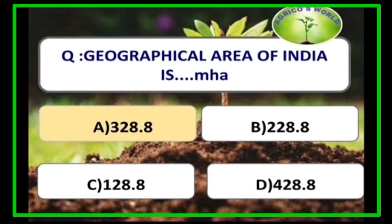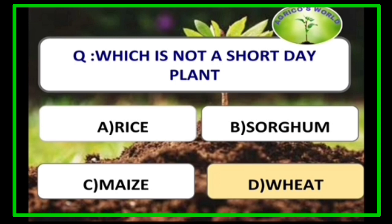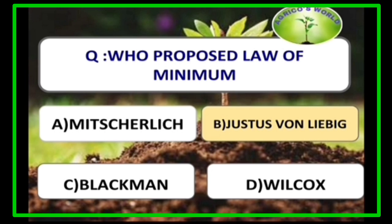The geographical area of India is 328.8 million hectares. Wheat is not a short day plant; rice, sorghum, and maize are short day plants, whereas wheat is a long day plant.